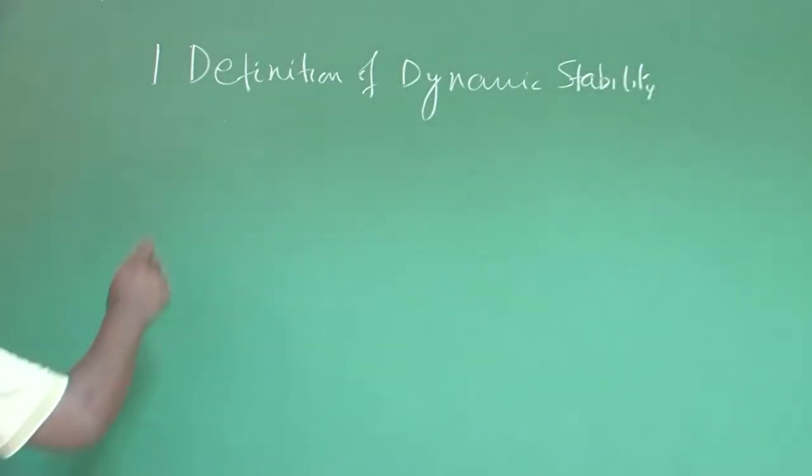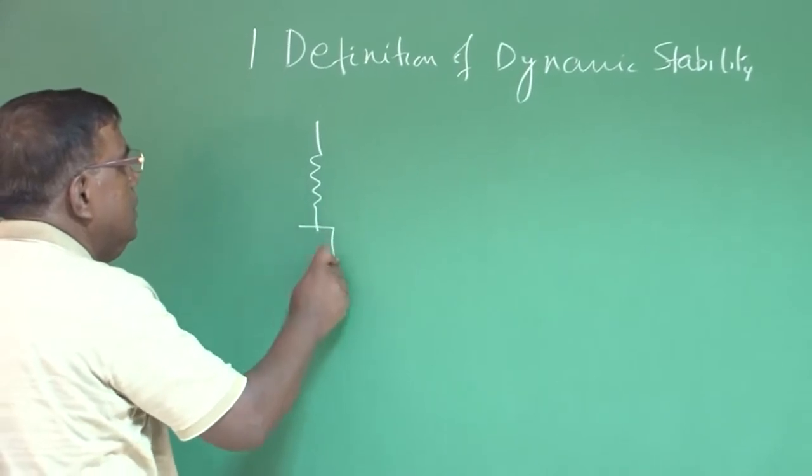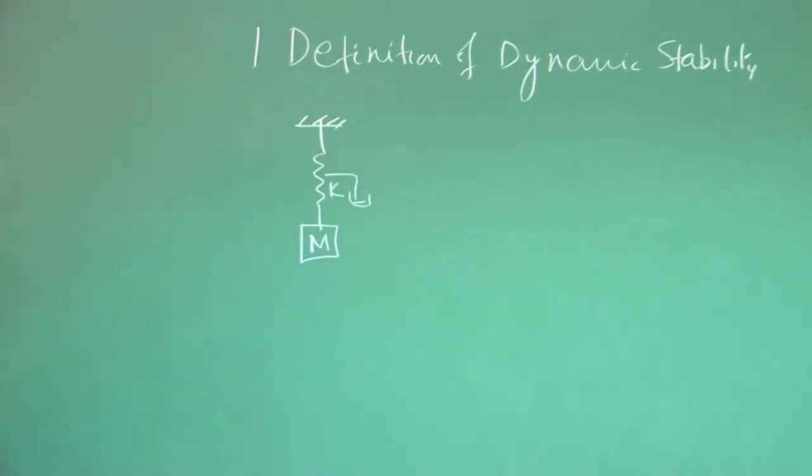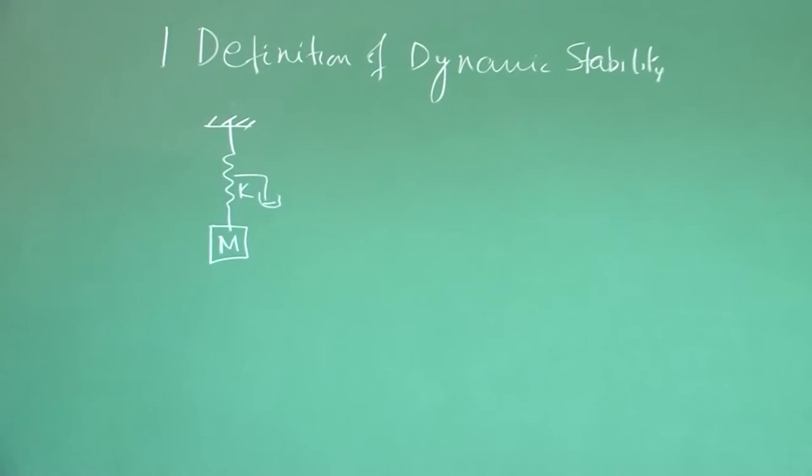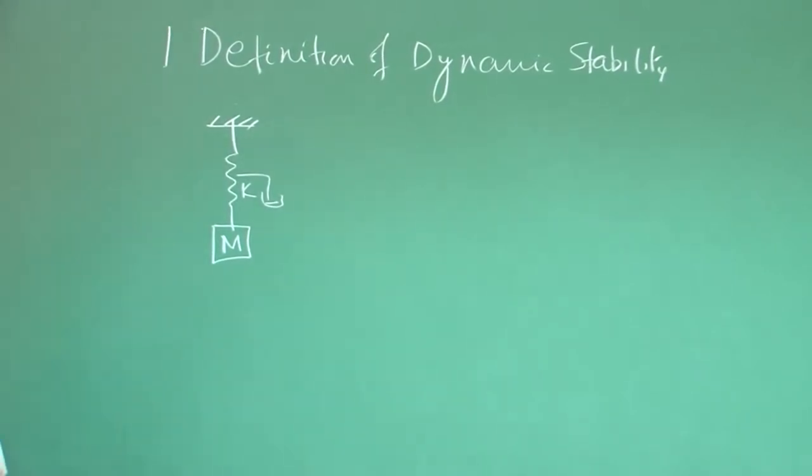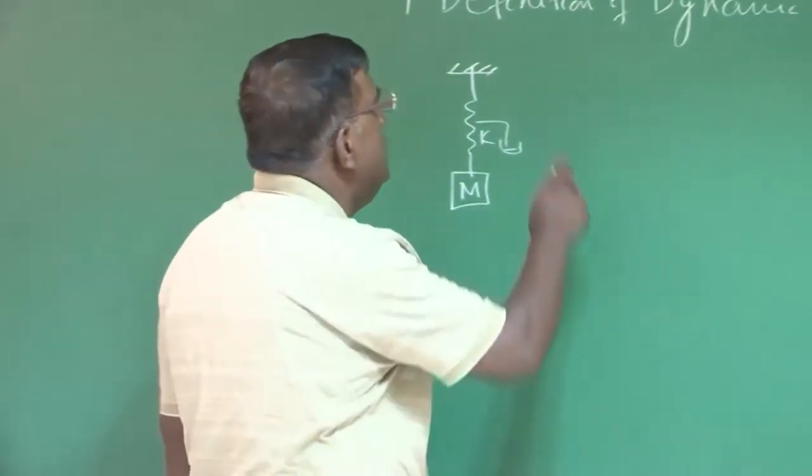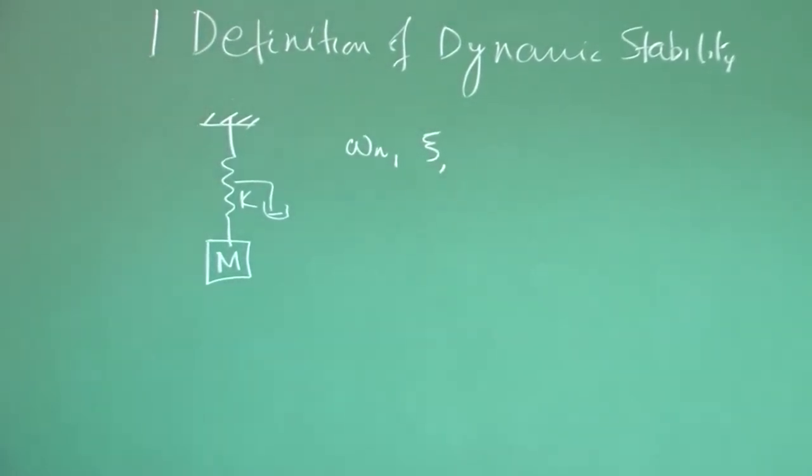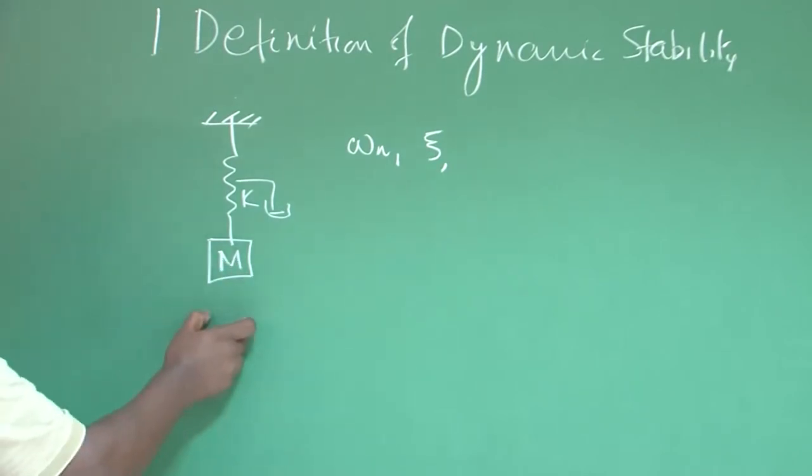We started with mass spring damper system, which is typically a second order system and most of our analysis takes help of understanding whatever we have through mass spring damper system. There we tried to understand what is natural frequency, what is damping ratio. We also tried to understand if I stretch it and release it, how this system is going to oscillate or behave depending upon whether it is over damped case, under damped case, or critically damped case.